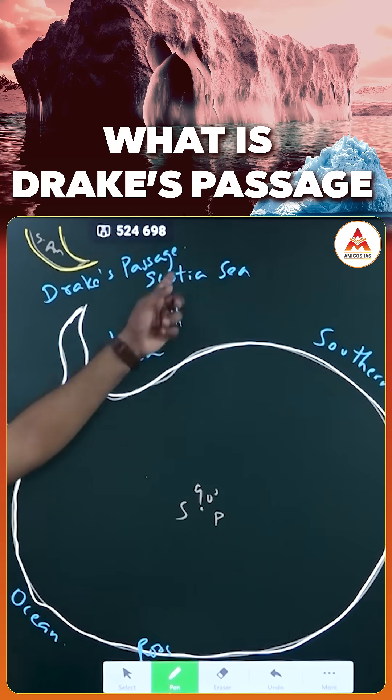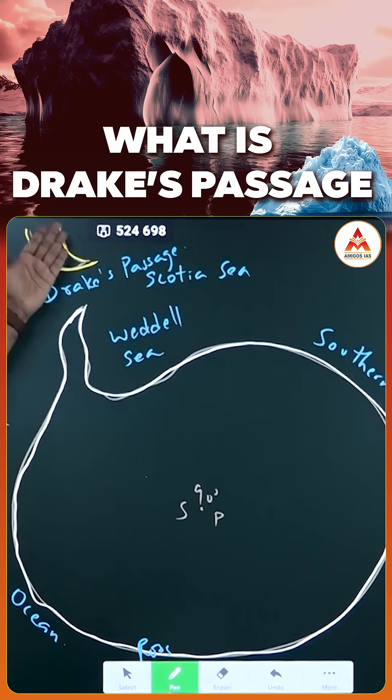So, Weddell Sea was asked, Scotia Sea was asked in the UPSC paper because there is a plate called Scotia plate here - a minor plate. Scotia plate is between which two plates: South America and Antarctica.